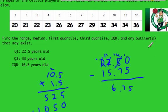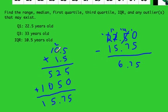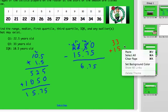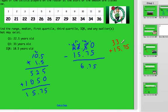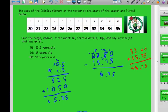We also check the high end: is 36 too high, or maybe 34? We take that same number 15.75 and add it to Q3 of 33. So 33 plus 15.75 — adding zeros to line up the decimals — equals 48.75. There is nobody on the Celtics, or in the NBA for that matter, who is 48.75 years old. So there is no outlier on the high end either. The ages are fairly spread out — some in their 30s, late 20s, and early 20s — with no value dramatically different from the rest.